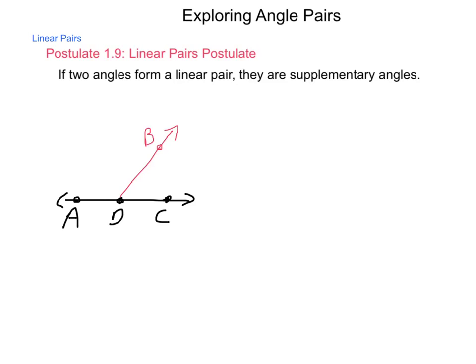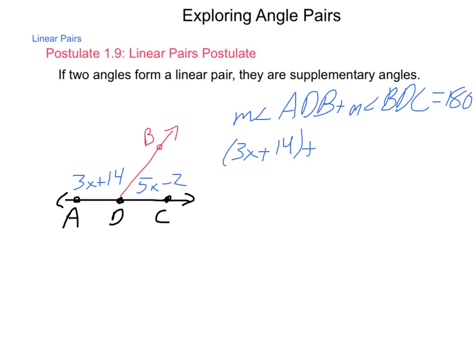I'm going to put some values in here. I'm going to call angle ADB 3x plus 14. And angle BDC, I'm going to call 5x minus 2. And what I want to know is what are the angle measurements of those two individual angles. And the way we do this is by using the idea of supplementary.